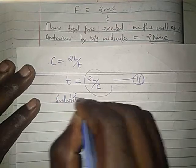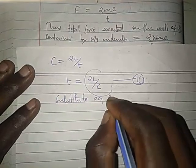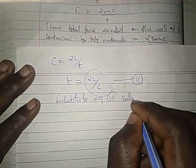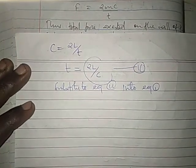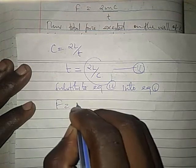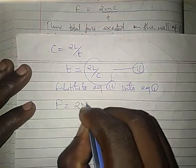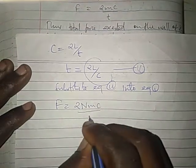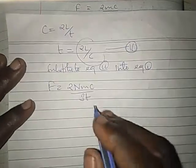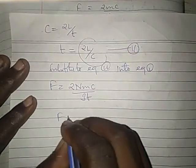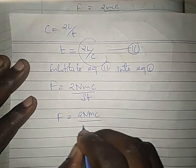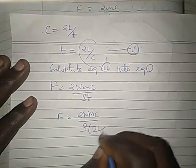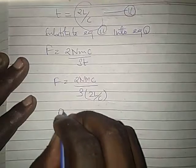But root mean square speed is 2L divided by time. Making time the subject, T equals 2L divided by C. Let's call it equation 2. Substitute equation 2 into equation 1.